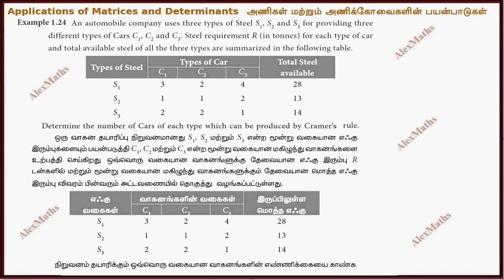Hi students, this is Alex here. Example 1.24. An automobile company uses three types of steel S1, S2, S3 for providing three different types of car C1, C2, C3. Now let's look at the table.